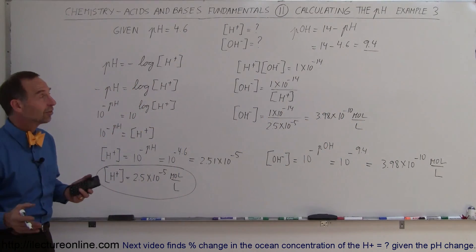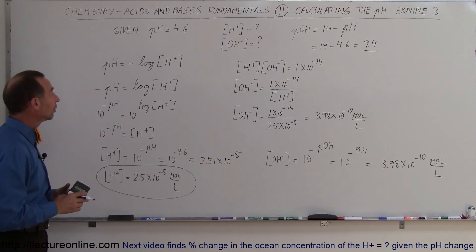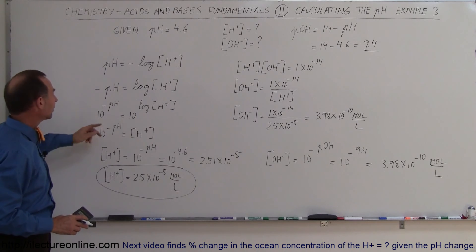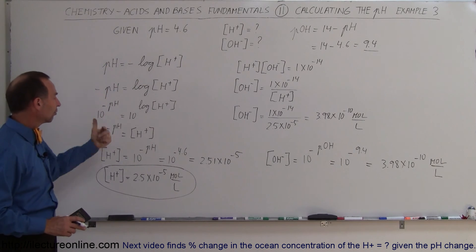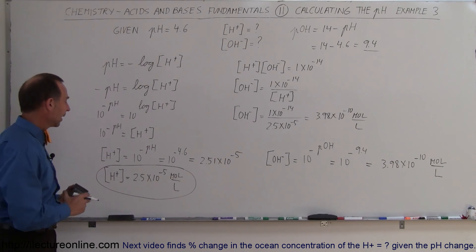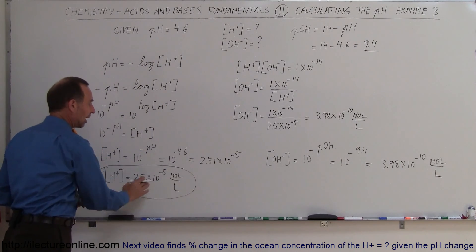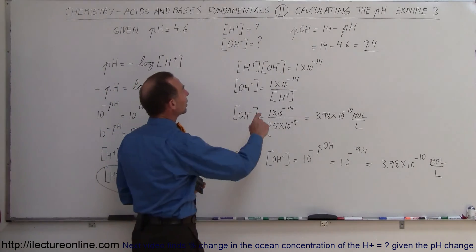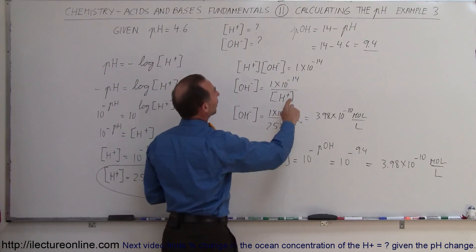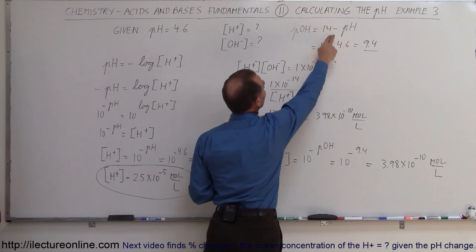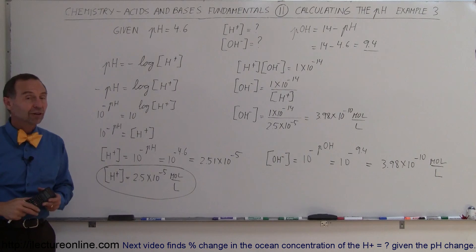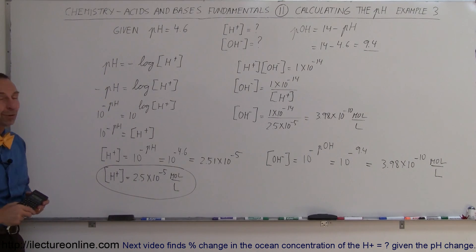So there are several ways to reach the same answer. We can find [H⁺] first by solving [H⁺] = 10^(-pH) and plugging in the pH, then compute [OH⁻] from Kw. Or we can use pOH = 14 - pH and apply [OH⁻] = 10^(-pOH) directly. Both approaches give the same result.